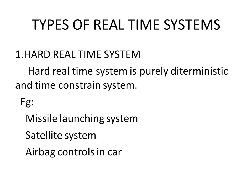Examples of hard real-time systems include missile launching systems, satellite systems, and airbag control systems. For instance, in an airbag control system, whenever a car hits something hard, the airbag has to open quickly within seconds. This is only possible when using a real-time or hard real-time system.